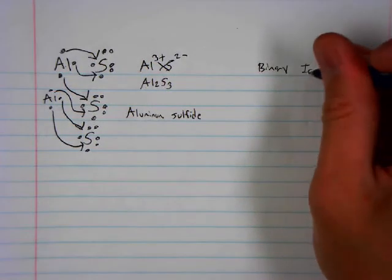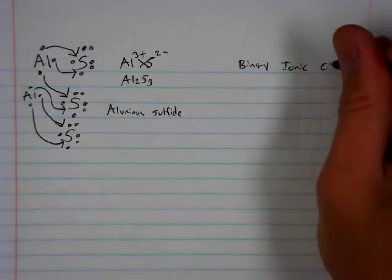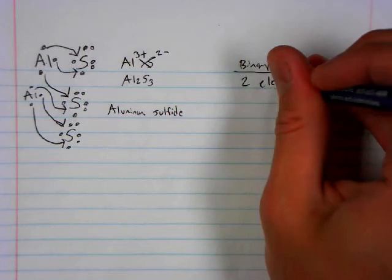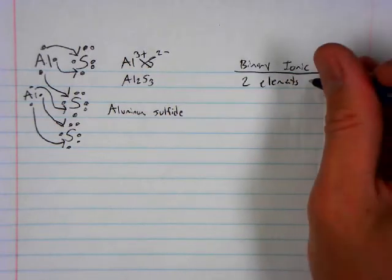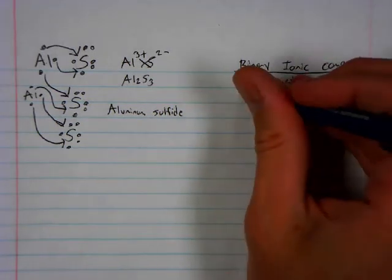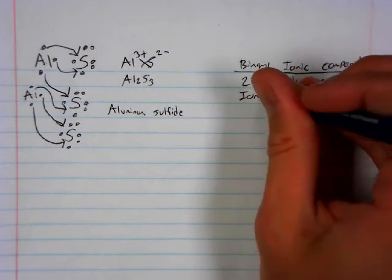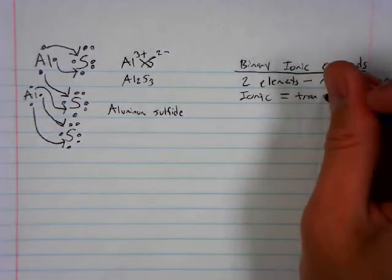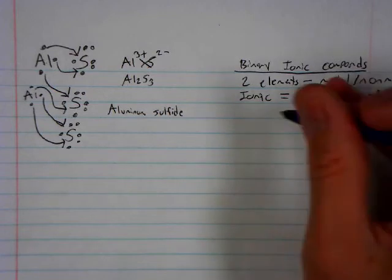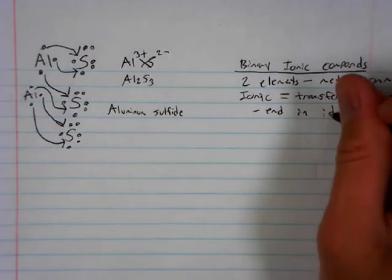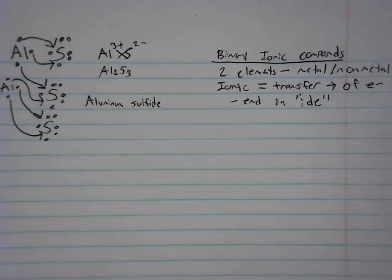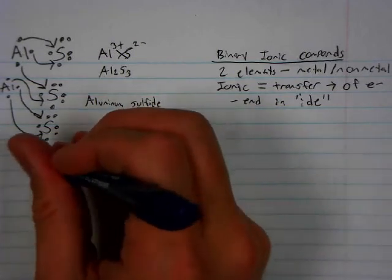So to summarize our binary, which means two, ionic compounds. Binary ionic compounds are made of two elements, which would be a metal and a non-metal. Ionic. The word ionic means transfer. Usually shown by an arrow of electrons. And these always end in I-D-E.